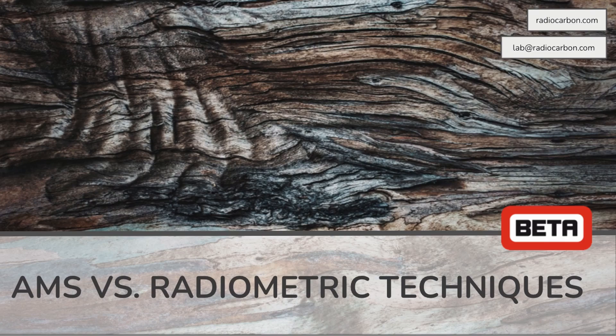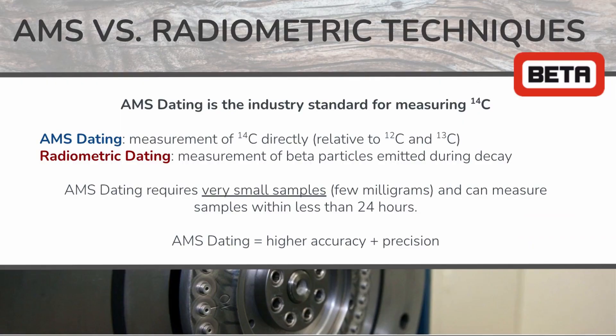AMS dating and radiometric dating are two different techniques used to date samples based on the decay of radiocarbon. AMS has become the standard in the industry for measuring carbon-14 content and offers several advantages over radiometric techniques.